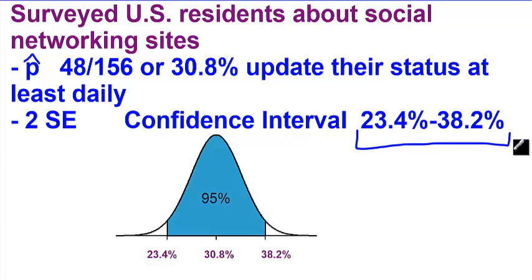We are 95% confident that between 23.4% and 38.2% of Facebook users between the age of 18 and 22 update their status at least daily. Statements like these are called confidence intervals, and it's the best that we can do. But we know that proportions can vary from sample to sample.